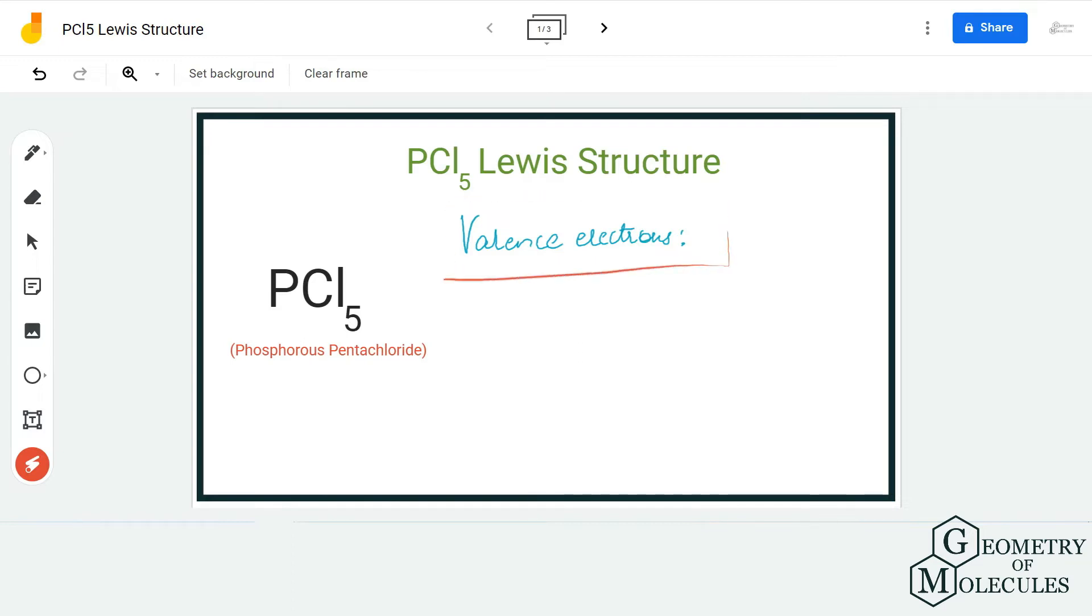know the total number of valence electrons for this molecule. It consists of one phosphorus atom which has five valence electrons in its outer shell. Each chlorine atom has seven valence electrons in its outer shell, so we multiply this number by five. If you do the calculations, the total number of valence electrons for PCl₅ is 40. Once you know the total valence electrons, we can start arranging the atoms and show